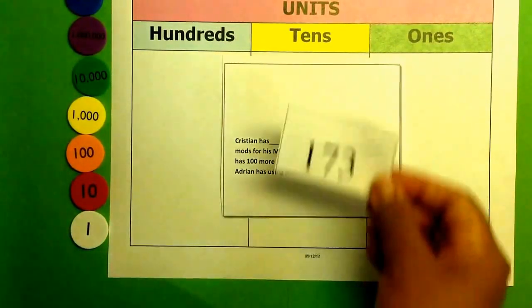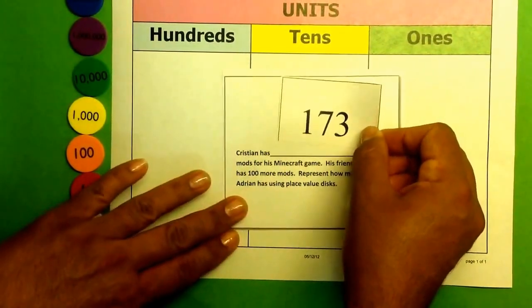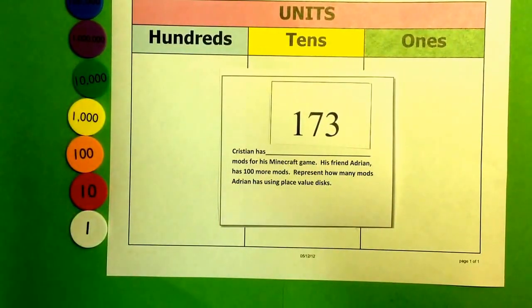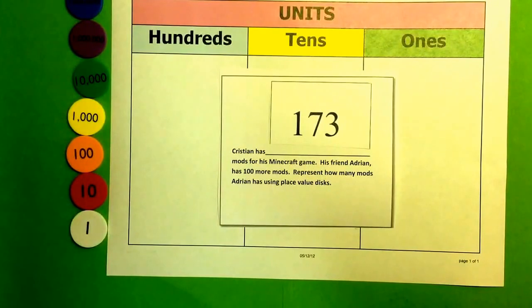So in this case, again, students can either roll die to create numbers or they can use number cards that are pre-created by the teacher and pre-cut and use those for the problems. And so you have multiple problems with different numbers. You can use the same scenario, but you have different numbers every time. And this would work well in a workstation.